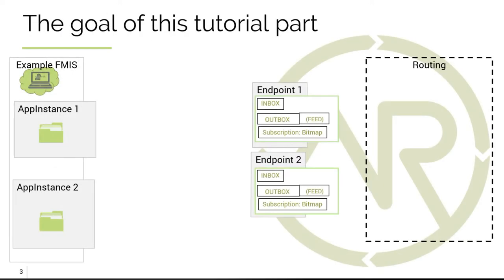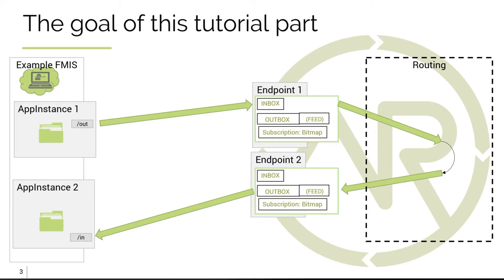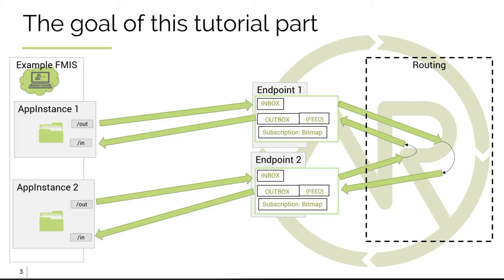The goal of our tutorial today is an example farm management system that has two app instances, both connected to the same AgriRouter account. In real life this scenario doesn't really make sense, but for our tests it's easier to take one application and not create two. Both app instances have their own endpoint, and we want them to communicate so we can send bitmaps from app instance one to app instance two and vice versa. The application will work file-based: a file placed in the out folder of app instance one should appear in the in folder of app instance two, and vice versa.